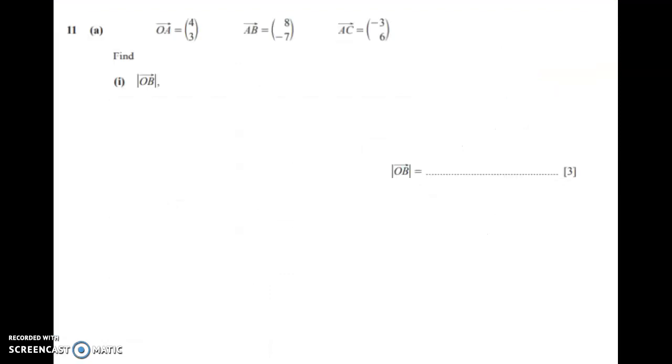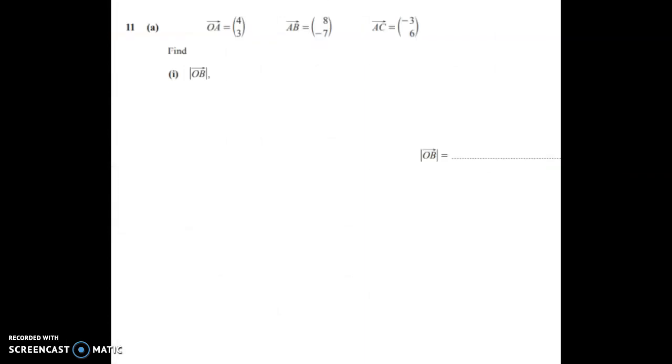Now we're going to look at part A of number 11, the one that Huffang asked about in class, and we're going to determine what the length of, or the magnitude of, OB is. So if we look at these, it would appear, and it wouldn't just appear to be that, it's a fact that, based on this information, that OA, O connects to point A, and A connects to point B. So we can link O and B by using point A.